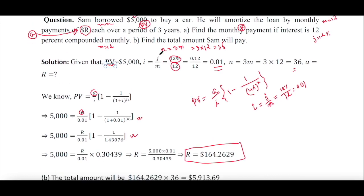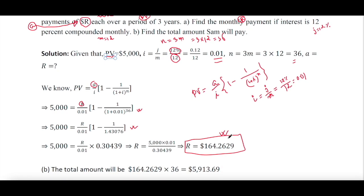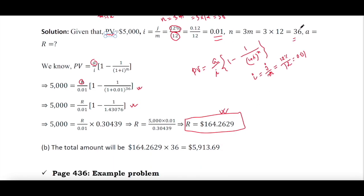When you are required to calculate the total amount Sam will pay, you need to multiply the installment amount by 36, since the total number of installments is 36.